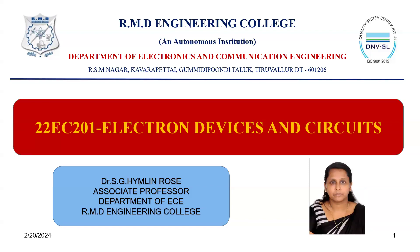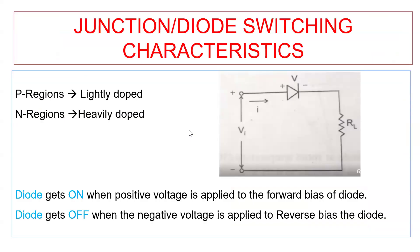So what are switching characteristics? When the diode is switched from forward bias to reverse bias, or vice versa from reverse bias to forward bias, it takes some finite time to reach the final steady state. This behavior of the diode is called the switching characteristics of the diode. Usually the P region is lightly doped and the N region is heavily doped, and because of this the switching time will be different.